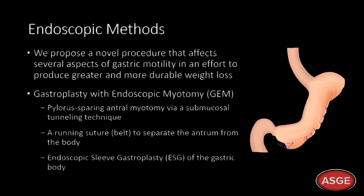We propose a novel procedure that affects several aspects of gastric motility in an effort to produce greater and more durable weight loss. Gastroplasty with endoscopic myotomy, or the GEM procedure, involves a pylorus-sparing antral myotomy via a submucosal tunnel, a running suture or belt to separate the gastric body from the antrum, and an endoscopic sleeve gastroplasty of the gastric body.